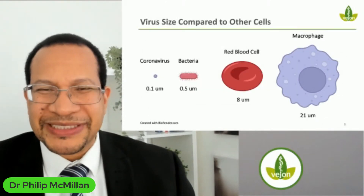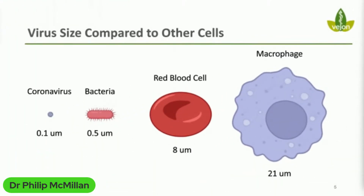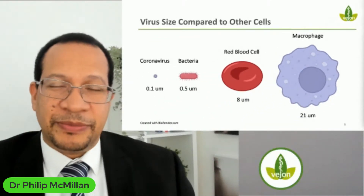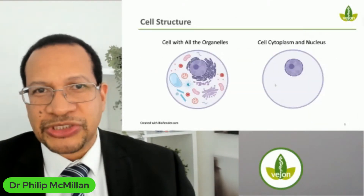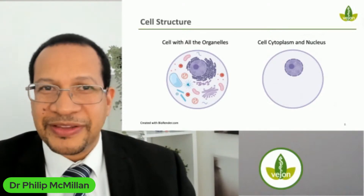I have an image here showing the different sizes approximately. A coronavirus is about 0.1 micrometers; bacteria are about 0.5 micrometers — roughly five times larger depending on type. A red blood cell is 8 micrometers — significantly bigger — and a macrophage is about 21 micrometers. So we can see the virus is tiny, but once it gets inside a cell it can replicate — thousands, even millions of viral particles can be produced over time, making it a very productive kind of infection.